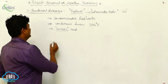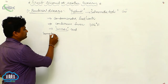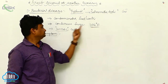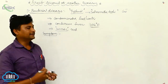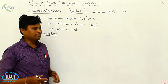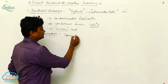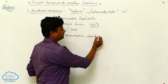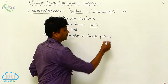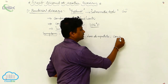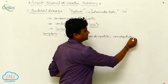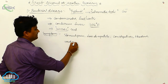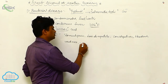What are the symptoms of typhoid? The main symptoms include continuous fever of 104 degrees, stomach pain in the intestinal area, loss of appetite, constipation, headache, and weakness.